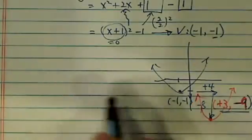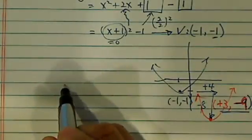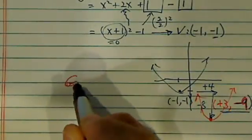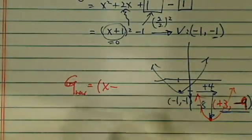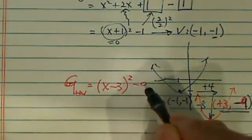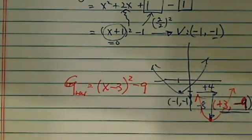The equation for the new one, let's call it function g(x), will be (x - 3)² - 9. This is the new equation.